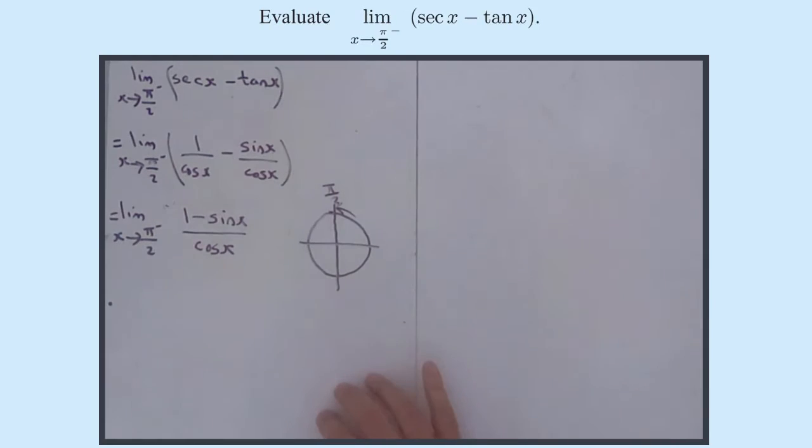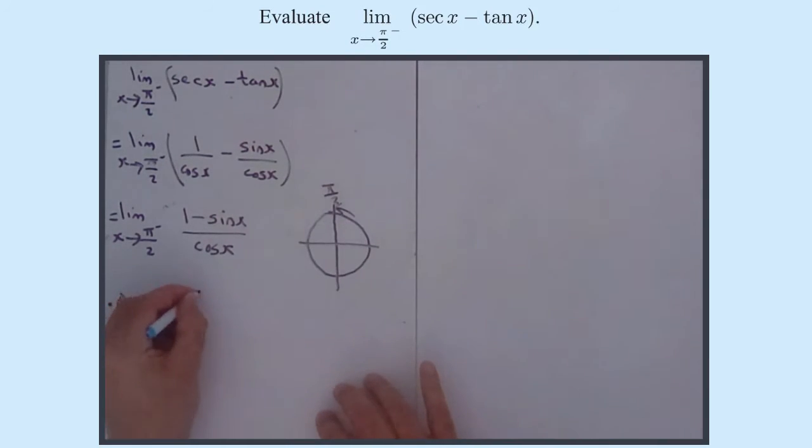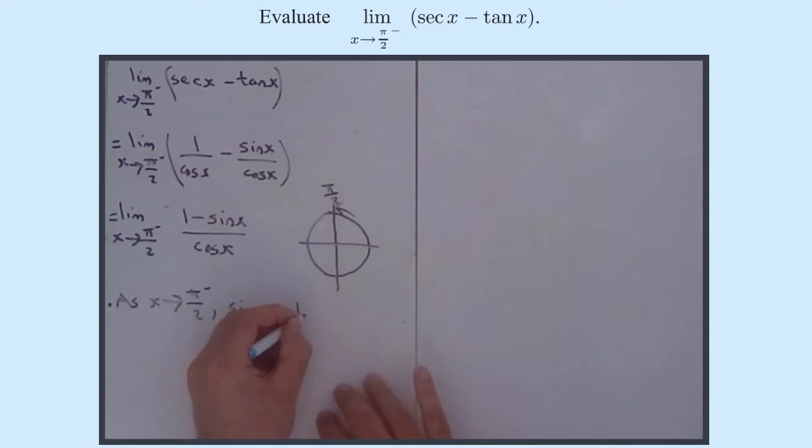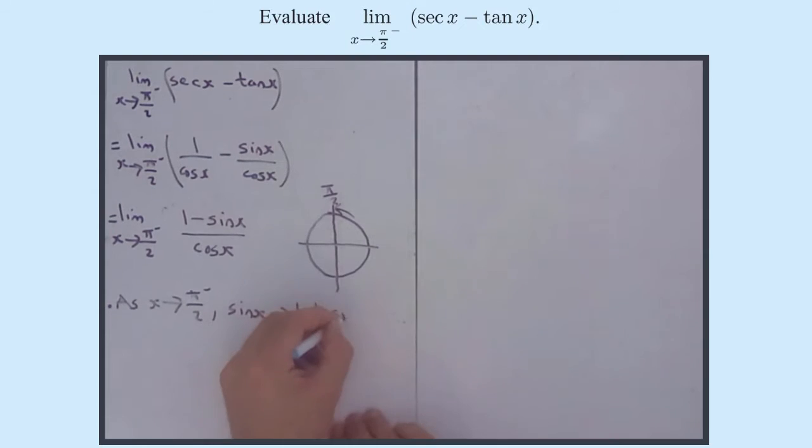And cos x, remember, is the width of the x coordinate, so as x approaches pi by 2 from something less than pi by 2, sine x, you can see, is approaching 1, so that means 1 minus sine x must be approaching 1 minus 1, which is approaching 0.